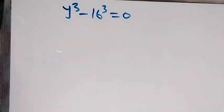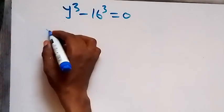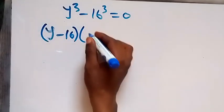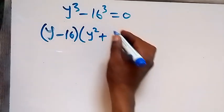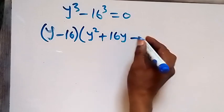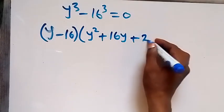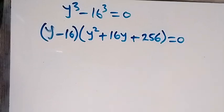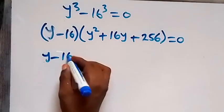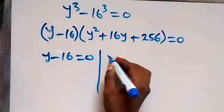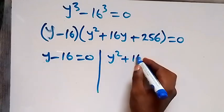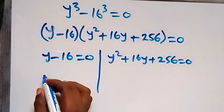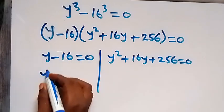From here, applying the identity for the difference of two cubes, this gives us: y minus 16, multiplied by y squared plus y times 16, that's 16y, plus 16 squared which is 256, equals 0. From here we have two possible cases: y minus 16 equals 0, and also y squared plus 16y plus 256 equals 0. From the first case, y equals 16.